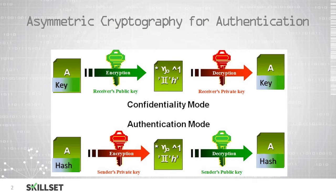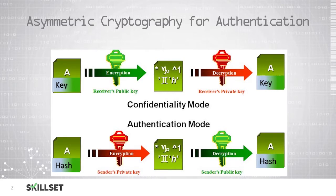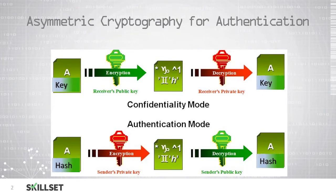In the top example, we are trying to keep data confidential while it is being transmitted across the internet. We obtain a copy of our recipient's public key, which can be publicly shared without any concern of losing the confidentiality of your data. Once we obtain it, we can encrypt the message or file using the recipient's public key. Once encrypted, only the recipient's private key can decrypt the data, and only our recipient should have a copy of the private key. So once the data is transmitted to them, they can use their private key to decrypt it.